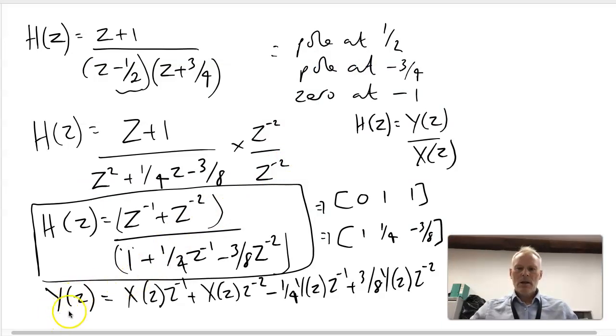The final piece of the jigsaw now we have this expression is to find the difference equation, and this is simply done through realization of the inverse Z transform. So if we transform these expressions, we will end up with Y(N) equals, this is the X(N) minus one term, and this is the Z minus two term.